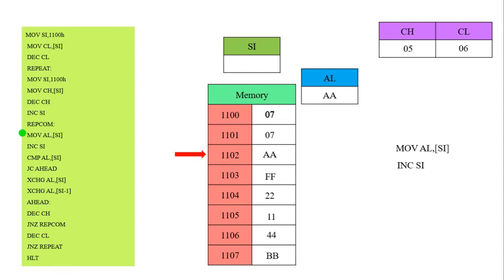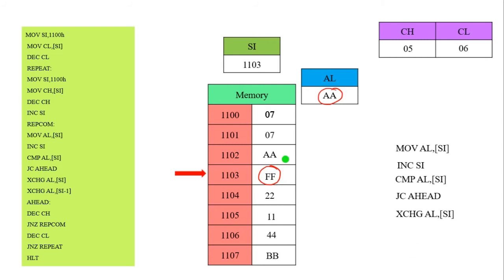The SI value becomes 1103, and this memory location contains FF. We compare AL with [SI]. The AL register's value becomes smaller compared to the memory location value FF. That's why we jump — there is no change in exchange. The decrement operation takes place directly. No exchange happens because the AL register's value is smaller. That's why the program jumps to decrement of CH.